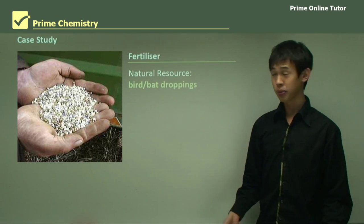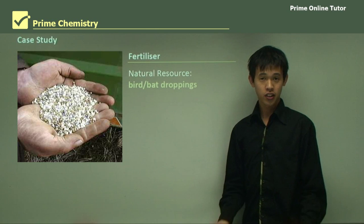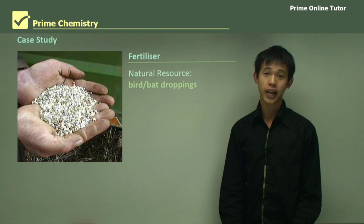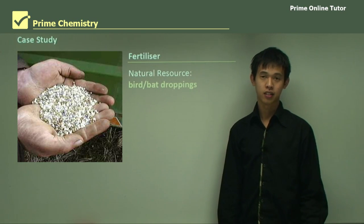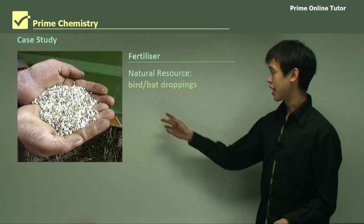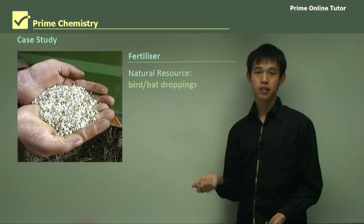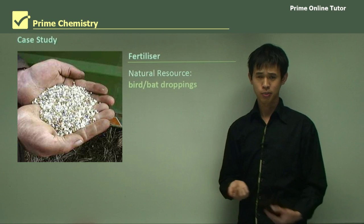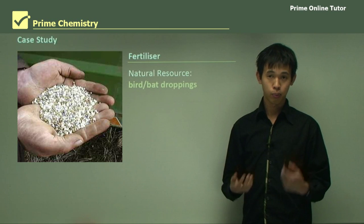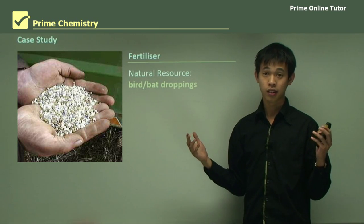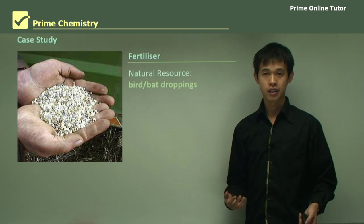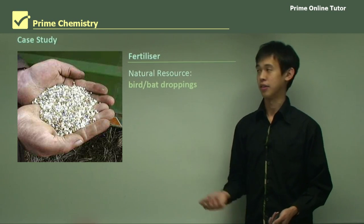The first case study we're going to do is fertilizer. The uses of fertilizer are simply to help grow plants for agriculture and to feed the human populace. The natural resource that we started with was bird and bat droppings — bat droppings are sometimes referred to as guano. In South America there were plenty of bats and birds, so they had a very rich resource of these natural fertilizers.